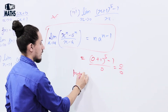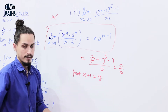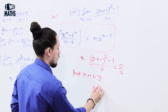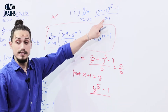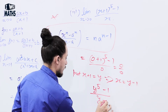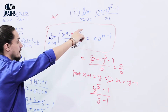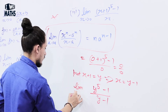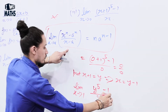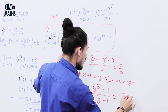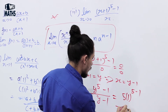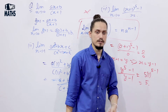Put x + 1 = y. We get (y⁵ - 1) / x, and since x = y - 1, we get (y⁵ - 1) / (y - 1). The limit now becomes lim (x → 0), which means y approaches 1. This is in the form (yⁿ - aⁿ)/(y - a), so the result = 5 × 1^(5-1) = 5.